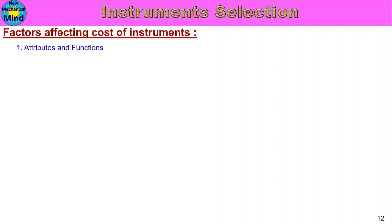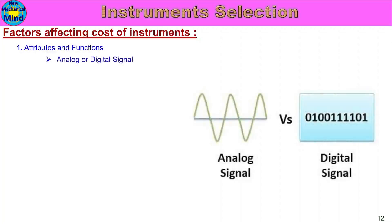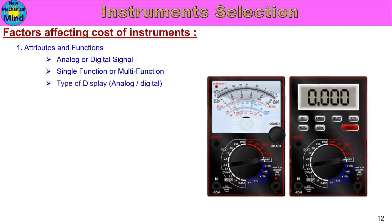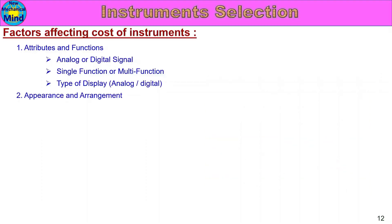Factors affecting the cost of instruments. One instrument's cost is affected by many factors. These include attributes and functions such as analog or digital signal — if the instrument uses analog or digital signal, the cost varies. Also single function or multi-function capability affects cost, as does the type of display — analog display or digital display.